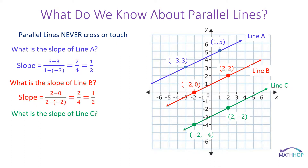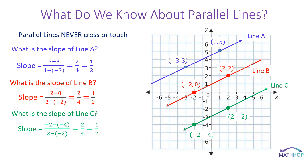And the slope of line C? We can go rise up 1, 2, run to the right 1, 2, 3, 4, and again we see that we have a slope of 2 over 4 or 1/2. From this, we can conclude that parallel lines have equal slopes — parallel lines have the same slope.